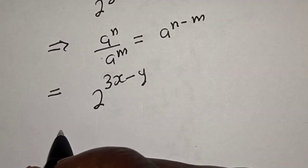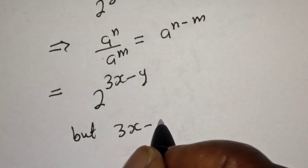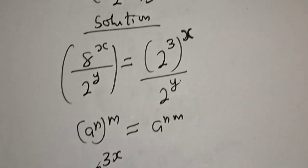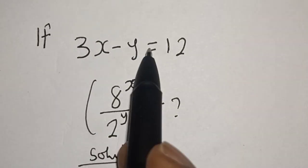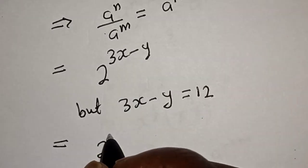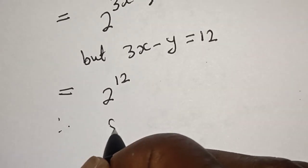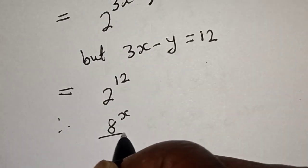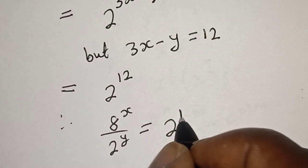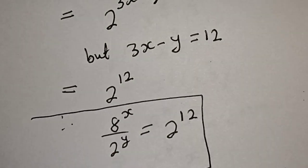But 3x minus y is equal to 12. So we have 2 raised to power 12. Therefore, 8 raised to power x over 2 raised to power y is equal to 2 raised to power 12, and that is our final answer.